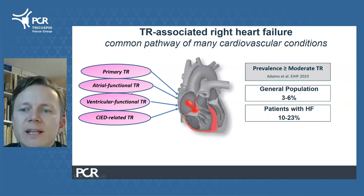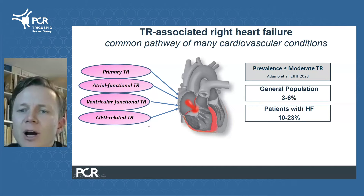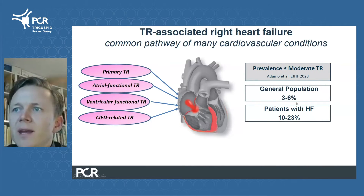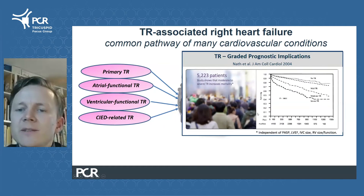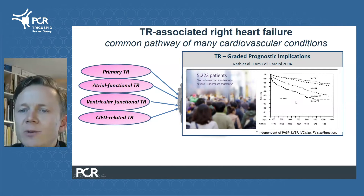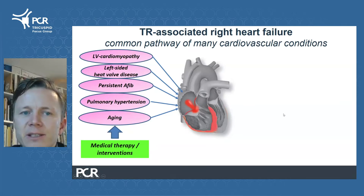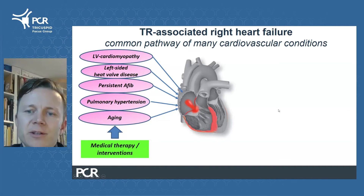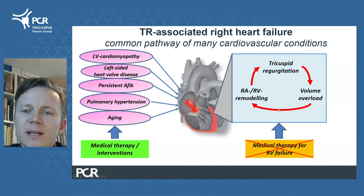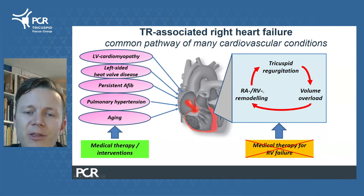The specific mechanisms leading to tricuspid regurgitation can vary at the individual patient level; however, significant TR is a common final pathway of many cardiovascular diseases and is very prevalent in the general population, especially in patients with left heart failure. Multiple lines of evidence now indicate that TR is independently associated with adverse outcomes in a dose-dependent fashion. When thinking about how to treat TR-associated right heart failure, it becomes crucial to diagnose and optimally treat the underlying cardiovascular condition in order to interrupt this vicious cycle — for which we unfortunately lack specific therapies to date.